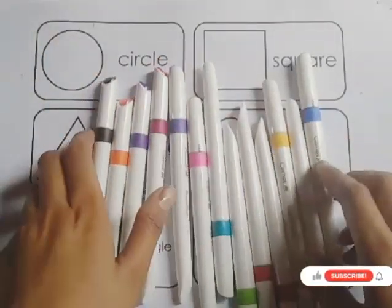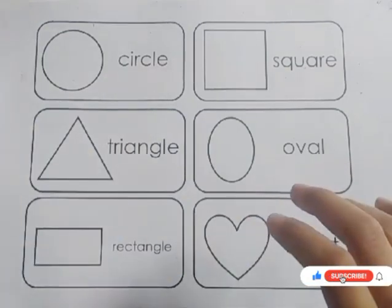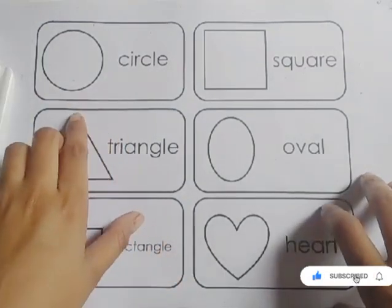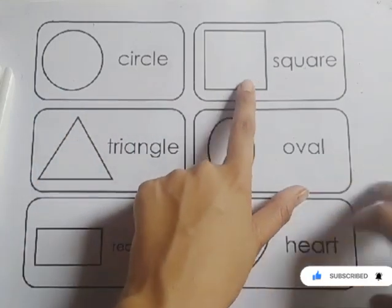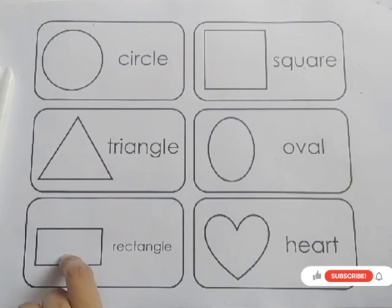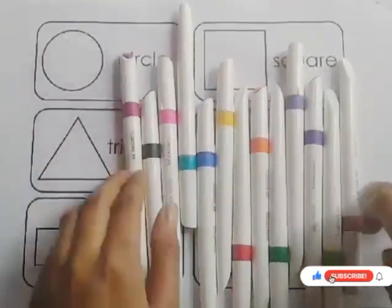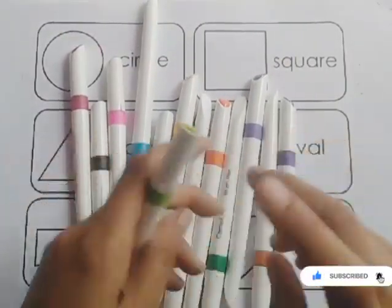Hello kids, welcome to today's study class. Today we learn shapes names and some colors names. Today we learn 2D shapes like circle, square, triangle, oval, rectangle, heart. And these are colors.